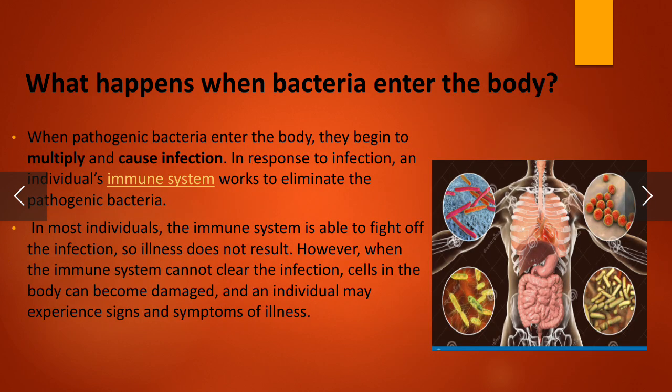When pathogenic bacteria enter the body, they begin to multiply and cause infection. In response to infection, an individual's immune system works to eliminate the pathogenic bacteria. In most individuals, the immune system is able to fight off the infection so illness does not result. However, when the immune system cannot clear the infection, cells in the body can become damaged and an individual may experience signs and symptoms of illness.